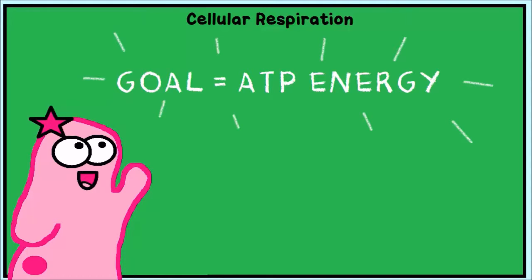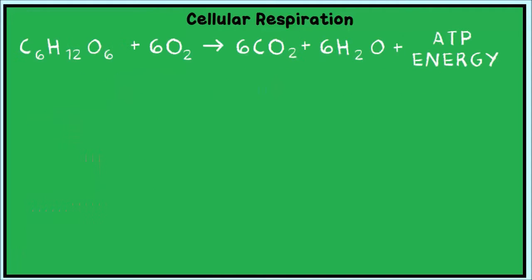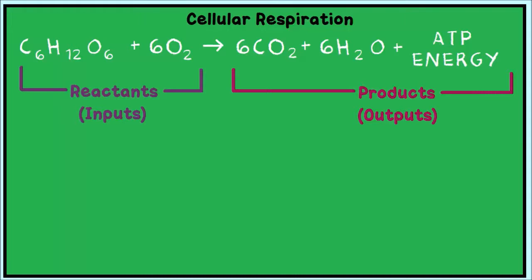Cellular respiration is a set of catabolic reactions that breaks down carbohydrates and sugars with the purpose of retrieving the ATP stored within them. Its chemical reaction shows glucose and oxygen as inputs, and carbon dioxide, water, and ATP energy as outputs.